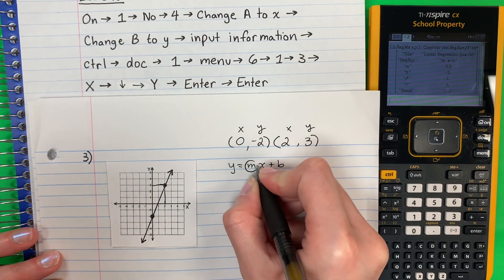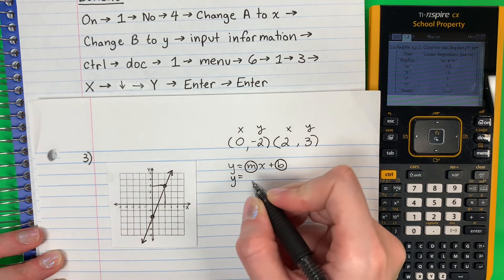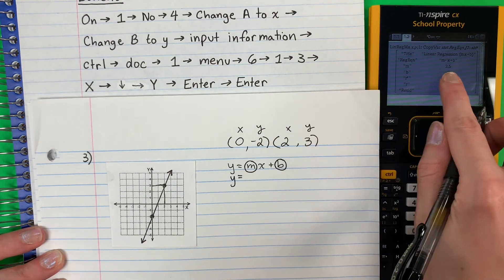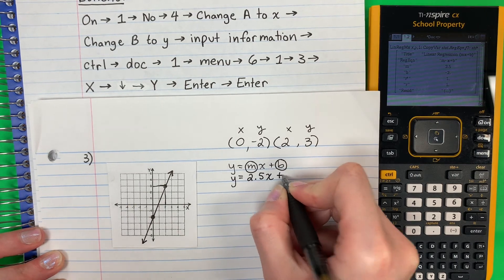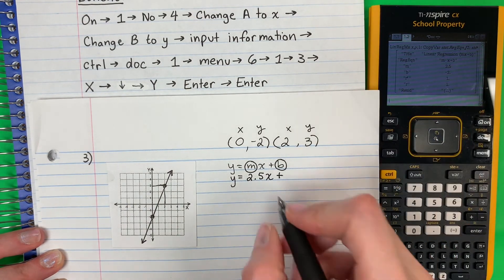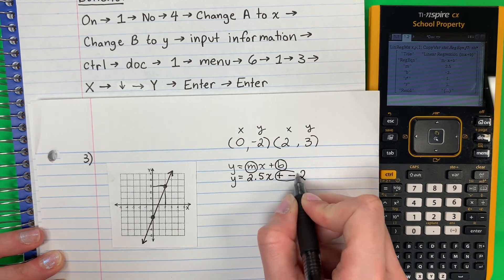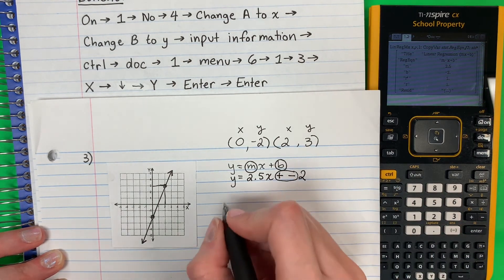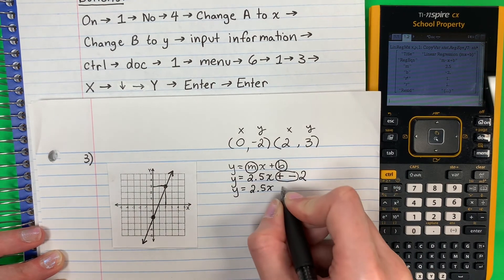So I want to put M and B. So I'm going to do Y equals. What is M? M is 2.5. X plus B is negative 2, negativo 2. Remember, what is plus, minus, más y menos? Plus, minus is minus. So Y equals 2.5X minus 2.